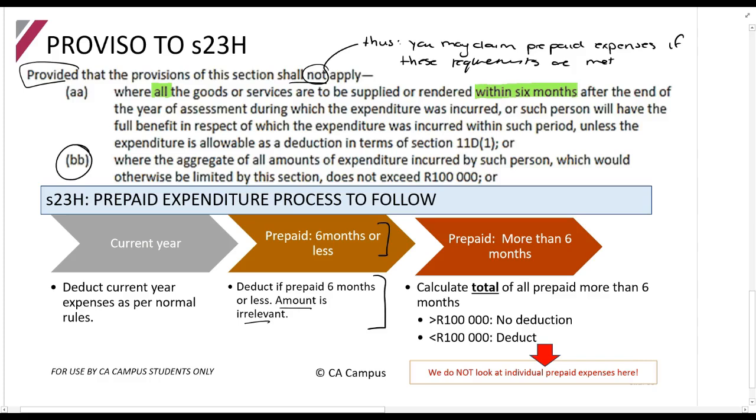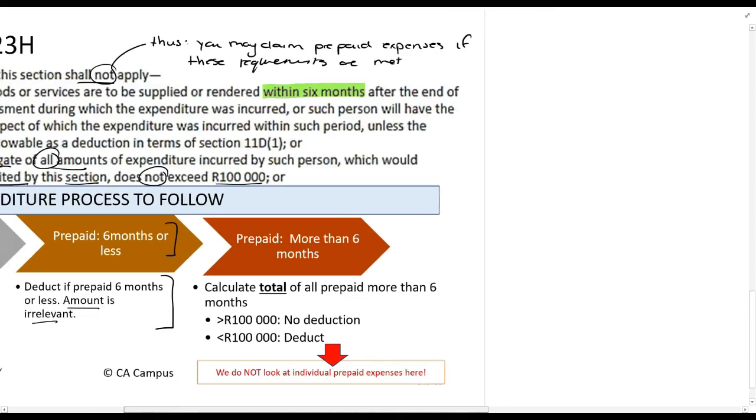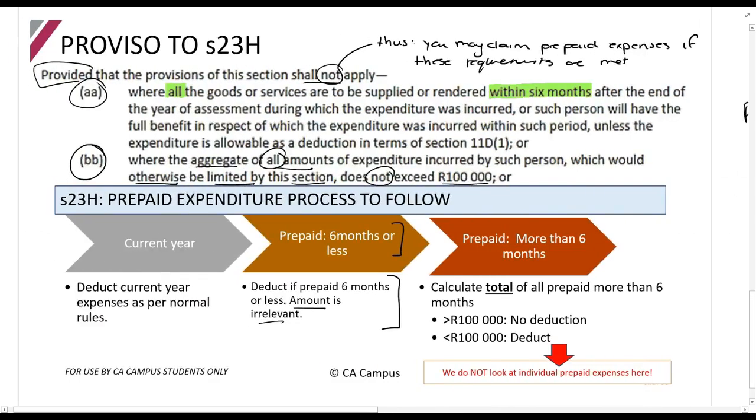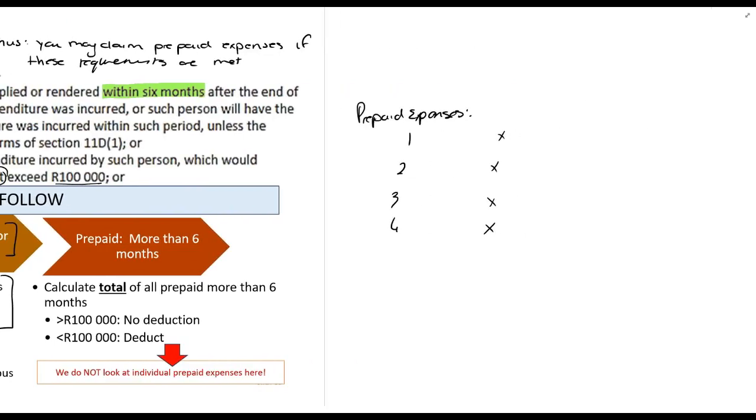BB then says where the aggregate of all amounts of expenditure incurred by such person, which would otherwise be limited by this section, does not exceed 100,000 rands. So what this means is if you take all of your prepaid expenses, number 1, 2, 3, 4, whatever those amounts are, first in AA we identify the ones which are for 6 months or less.